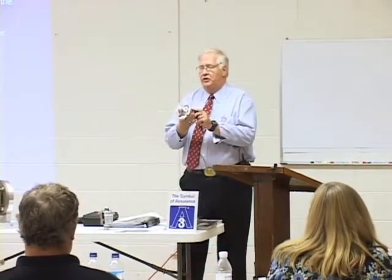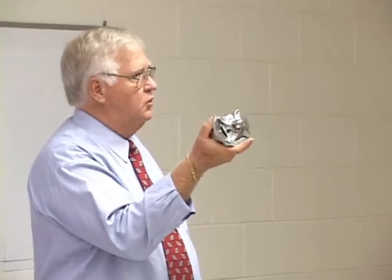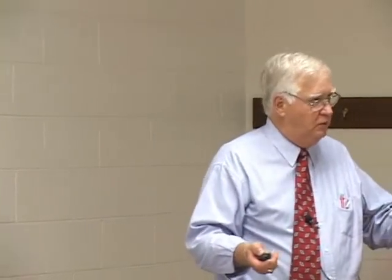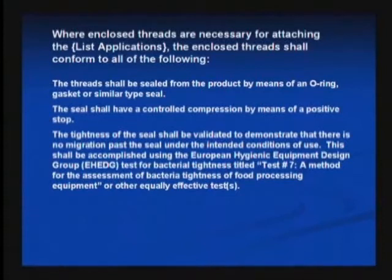Here's an example that Lyle will be showing you. It's not uncommon to see a pump impeller held on by either a gasketed cap nut or, in some cases, a bolt that threads down into a threaded shaft. These are what we are calling the enclosed threads. They're not sanitary by design, but they have to be sealed from the product with an o-ring. There shall be controlled compression of the o-ring, so you have to have a metal-to-metal stop somewhere to control that compression so you don't screw it down to the point where you tear or cut the o-ring and make it ineffective. The tightness of the seal has to be validated to demonstrate that there isn't any migration past the seal to get down into the areas behind where the threads go.